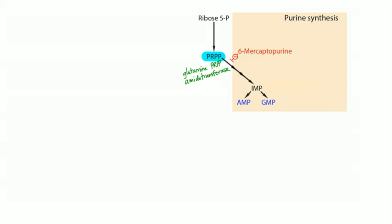There are several steps requiring glycine, aspartate, glutamine, and tetrahydrofolate — so tetrahydrofolate is critical for both purine and pyrimidine synthesis. Ultimately you form IMP (inosine monophosphate), which goes on to form either AMP or GMP. The enzyme that converts IMP to GMP is IMP dehydrogenase — the immunosuppressant mycophenolate inhibits that enzyme.